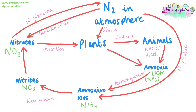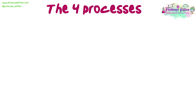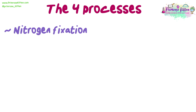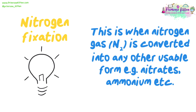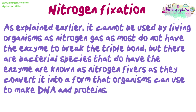We are now going to talk through the main processes in the cycle. You will need a diagram of the cycle for your notes. The four main processes are nitrogen fixation, nitrification, ammonification, and denitrification. Nitrogen fixation is when nitrogen gas is converted into any usable form, for example nitrates or ammonium. It cannot be used by living organisms as nitrogen gas, as most do not have the enzyme to break the triple bond. Bacterial species that do have the enzyme are known as nitrogen fixers, as they convert it into a form that organisms can use to make DNA and proteins.